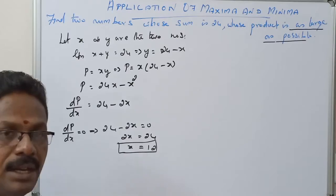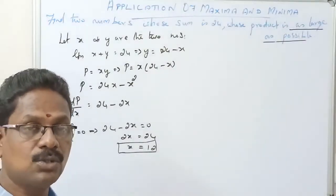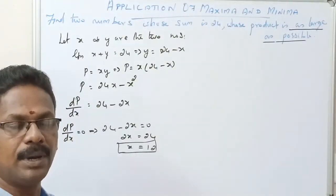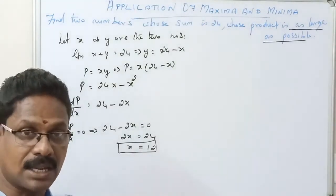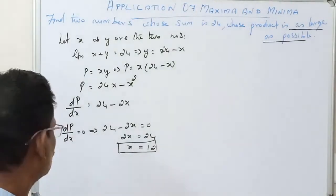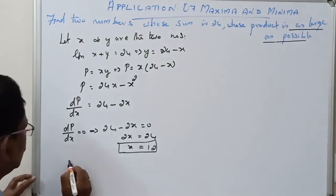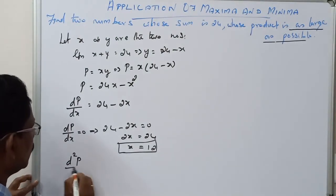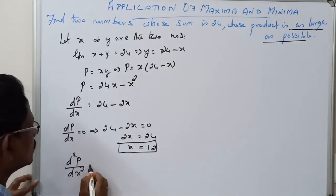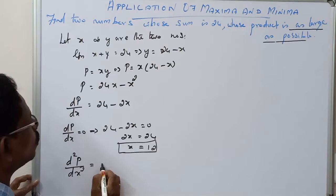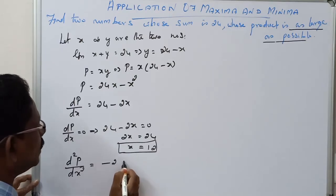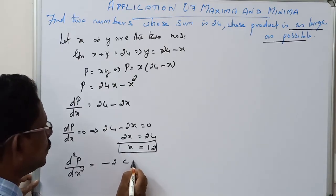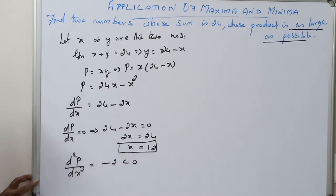Now for the second derivative: d²P/dx² equals minus 2, which is less than 0.